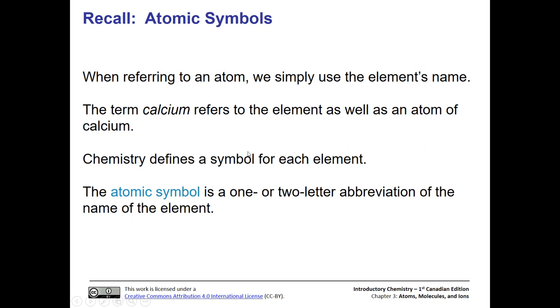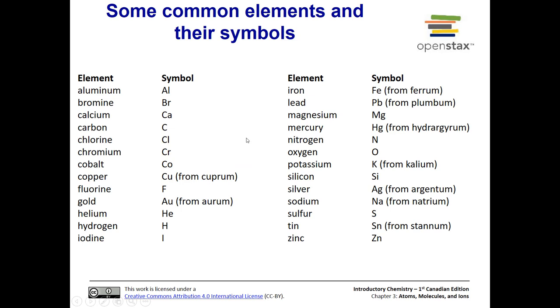So let's remind ourselves about atomic symbols. When we refer to an atom, we simply use the element's name. That doesn't matter if we're talking about the element calcium, for instance, or an atom of calcium. There is a defined symbol for each element, and that symbol is a one or two letter abbreviation of the name of the element. So here are some common elements and their symbols. This is a good list to become familiar with. Aluminum is AL. Notice how the first letter is capitalized, the second letter is lowercase. For elements with two letter elemental symbols, the first letter is always going to be capitalized, the second letter is always going to be lowercase.